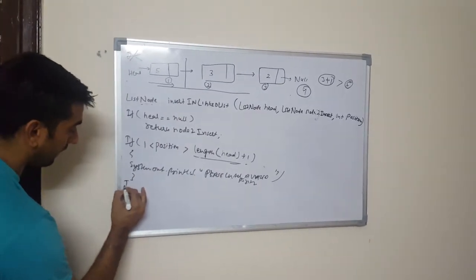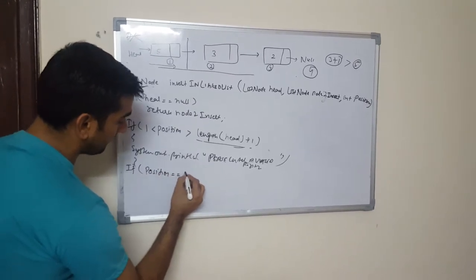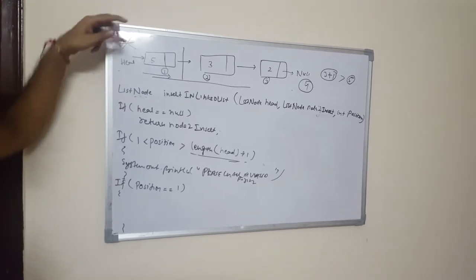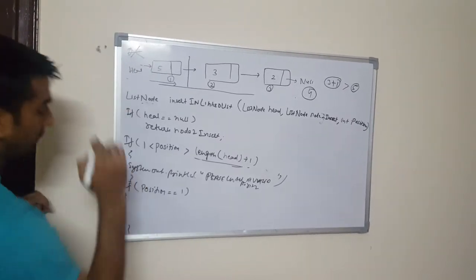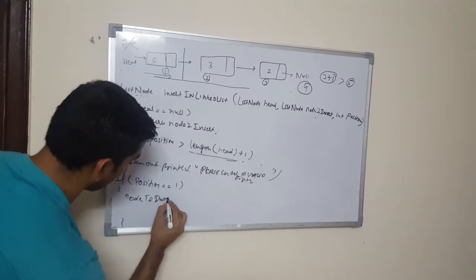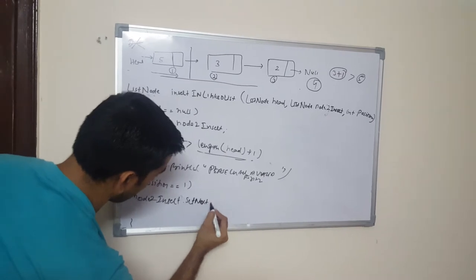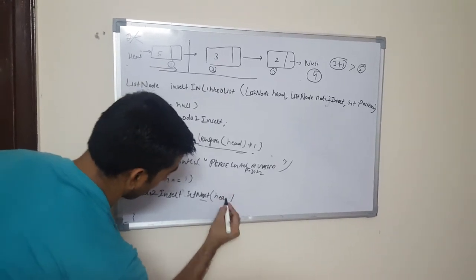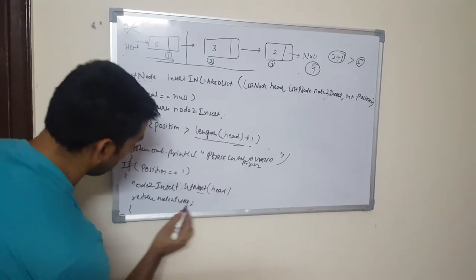If we have to add a node at the beginning — that means position equals one — there will be two pointer update operations. The newly added node will point to the current head node, and the head pointer will be updated to the newly added node. In code: nodeToInsert.setNext(head), and then return nodeToInsert. That handles the beginning case.